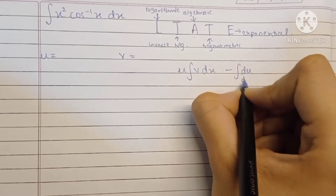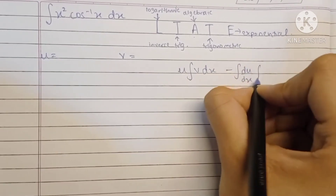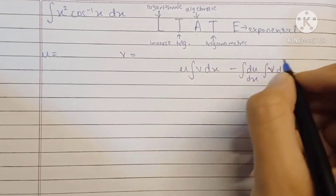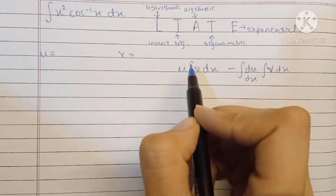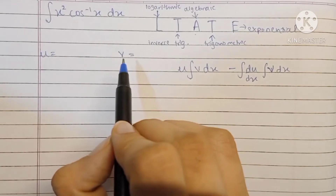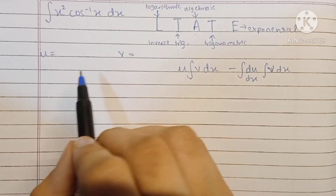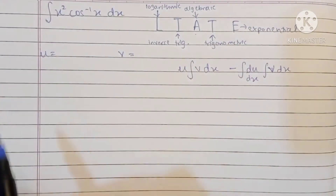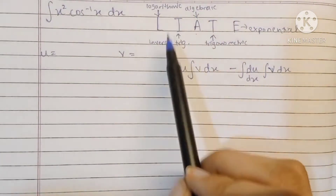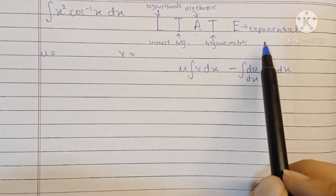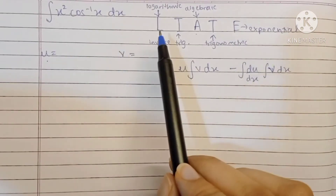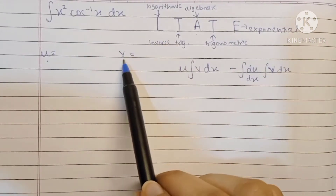LIATE helps us decide which term we should keep as u and which term we should keep as v, depending on which term is easier to integrate and which term is easier to differentiate. It gives the order of preference for the first term, and once we select the first term, the second term automatically gets selected.